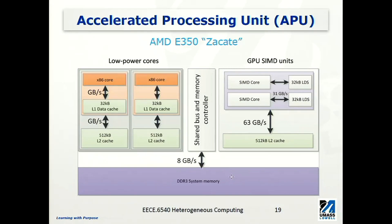Local memory, private memory, and global memory will be discussed in more detail later. Using this diagram, you can see the locations of these memory types, their ownership, whether they are accessible to some cores or not, and their sizes. As expected, private memory is typically smaller than local memory, which is typically much smaller than global memory.